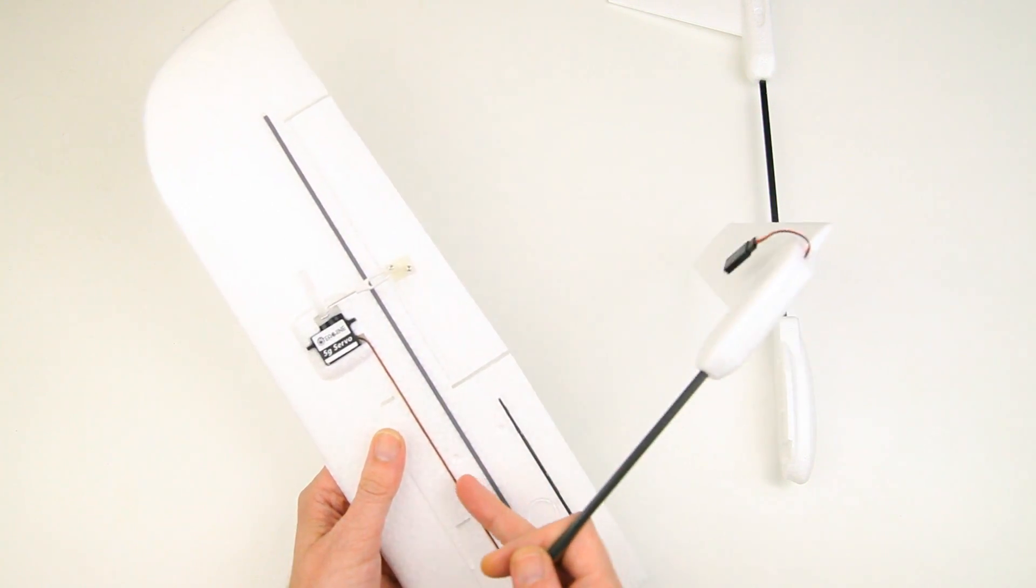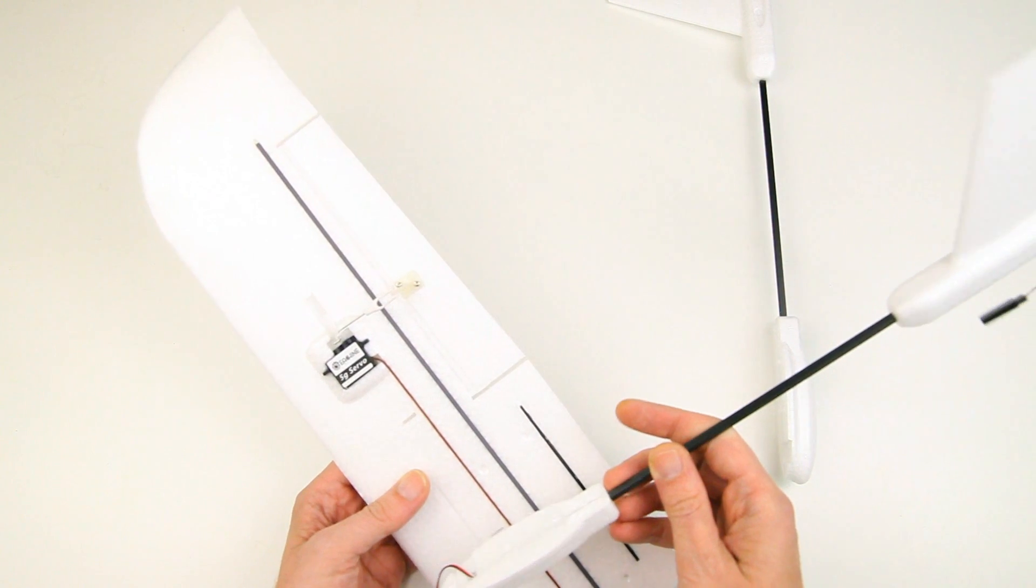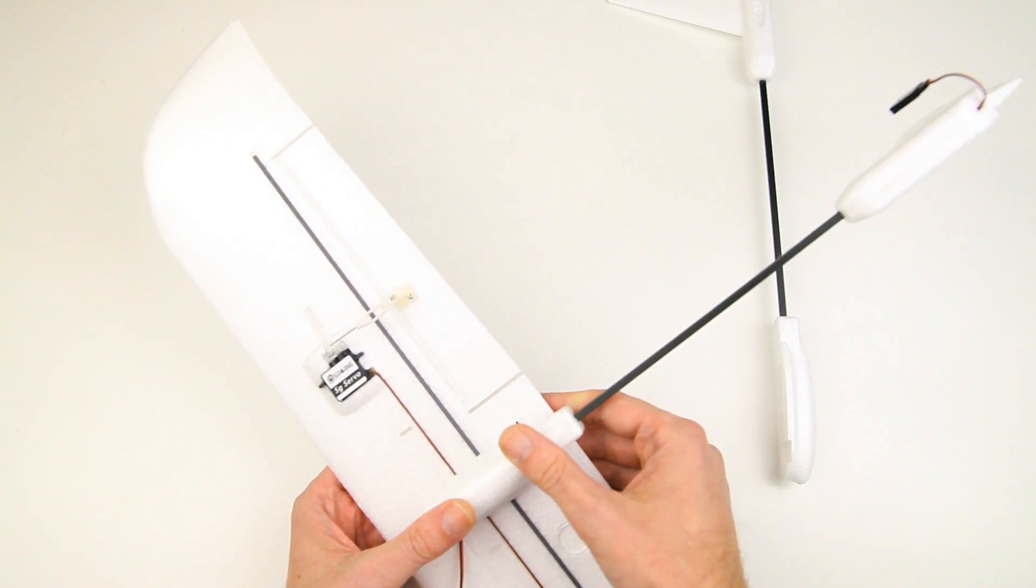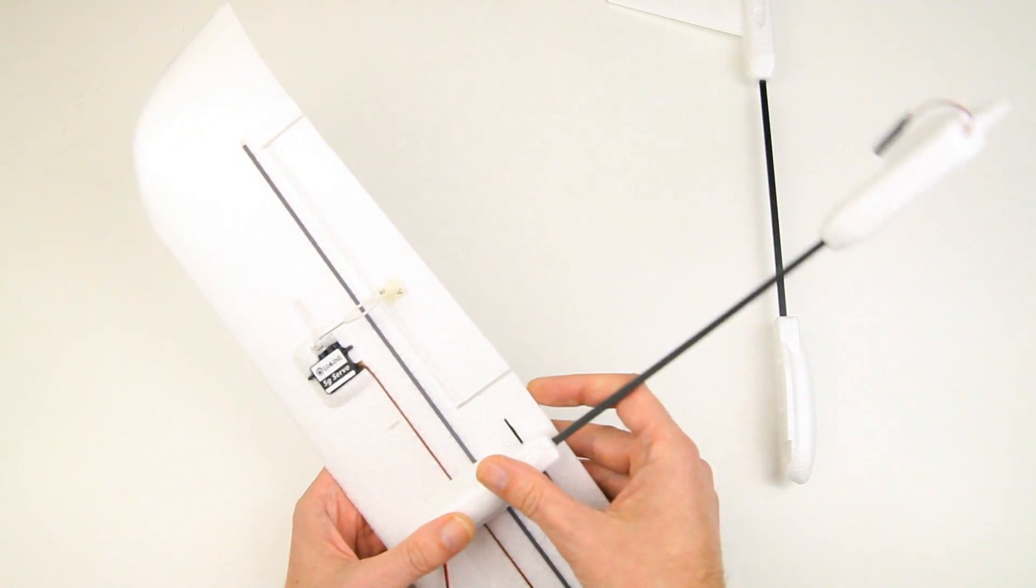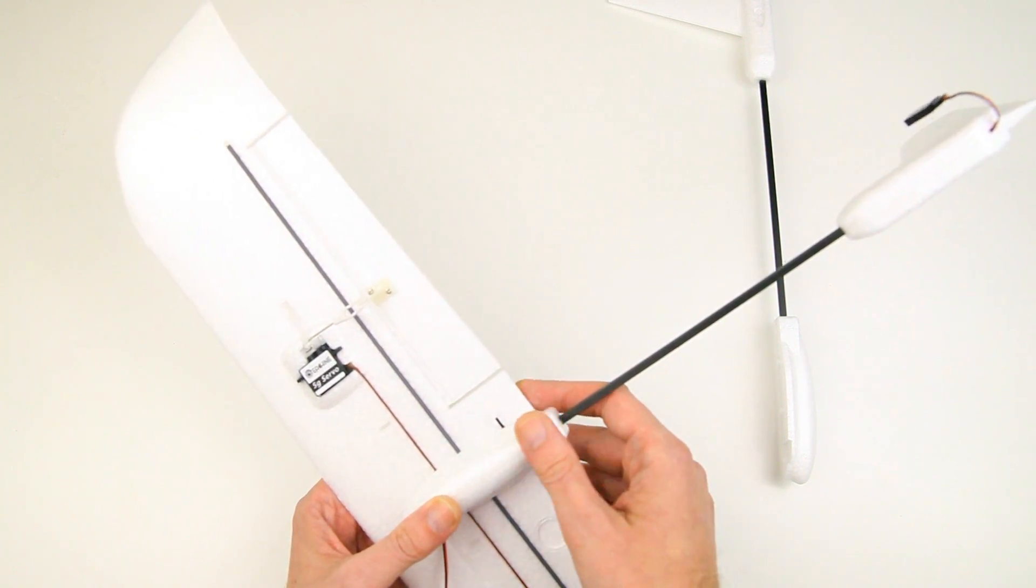There are some little indents in the wings - that's probably not visible in the video - but there are some indents and some protrusions on these tail sections that slot together. You'll have to glue these together. The kit doesn't come with glue, but I will probably use CA glue for that - nice and light.